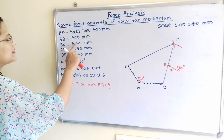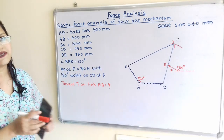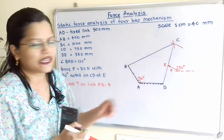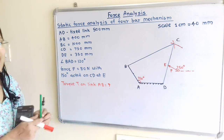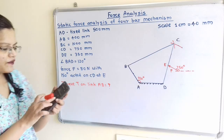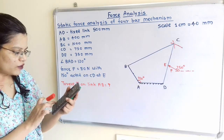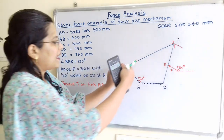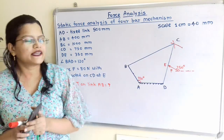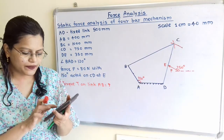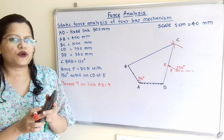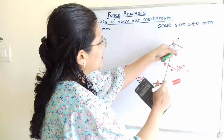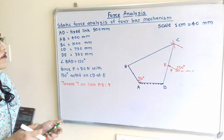Link BC is 1000 mm and CD is 750 mm. We don't know the angles these links make, so we use a compass. BC is 1000 divided by 40 equals 25 cm — take B as center and mark one arc. For CD, 750 divided by 40 equals 18.75 cm — take D as center, set 18.75 cm, and mark another arc. The point of intersection is point C, giving us links BC and CD.